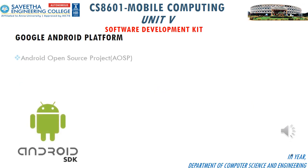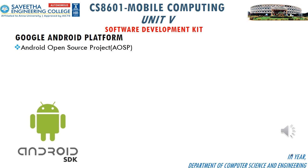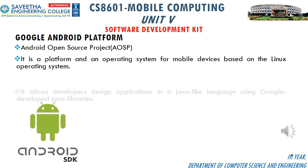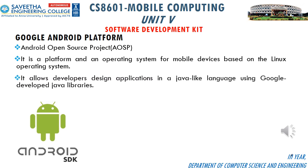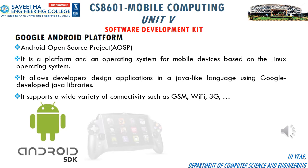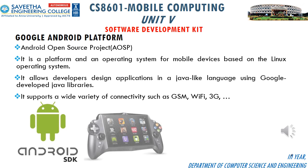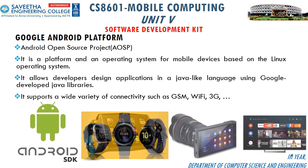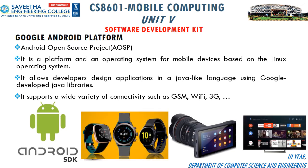The core Android source code is known as the Android Open Source Project, primarily licensed under the Apache License. It is a platform and operating system for mobile devices based on the Linux operating system. It allows developers to design applications in a Java-like language using Google-developed Java libraries. It supports a wide variety of connectivity such as GSM, Wi-Fi, and 3G, and has allowed variants to be developed for game consoles, digital cameras, PCs, and others. Well-known derivatives include Android TV for televisions and Wear OS for wearables, both developed by Google.